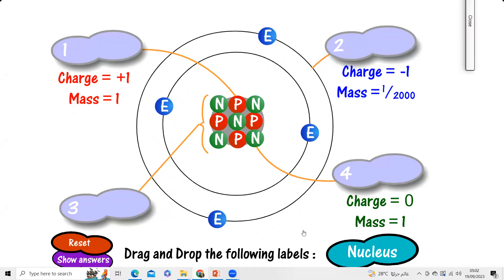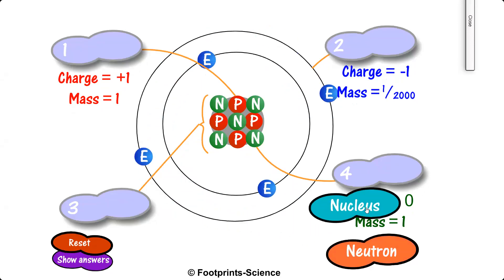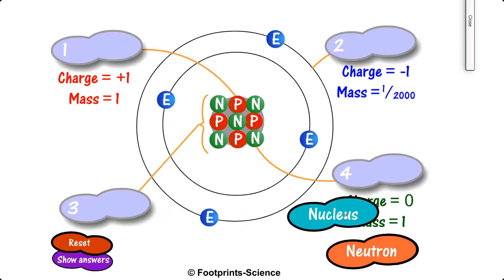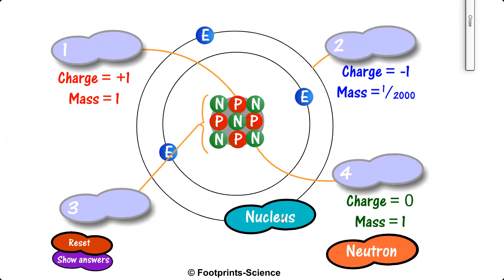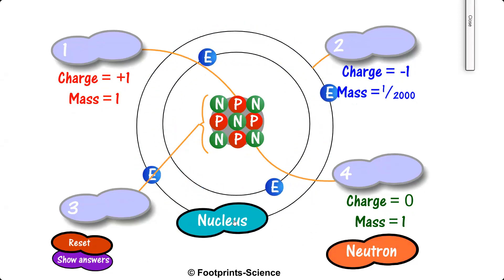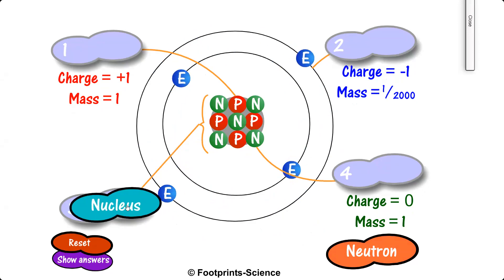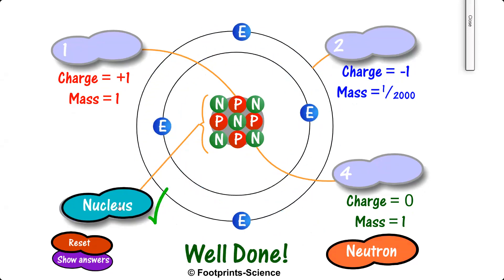For the nucleus, for example, I need to identify where my nucleus is. Now look at it. If I go to the wrong position, it gives me an X, but if I go to the right position like here, this is where I could find my nucleus, I get a tick.